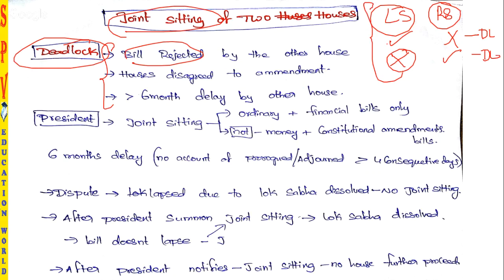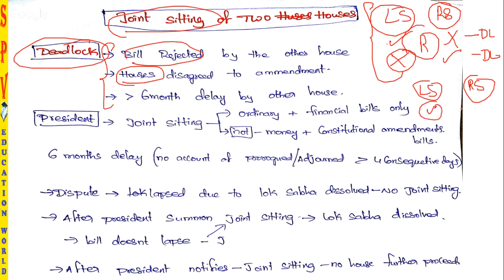Condition two: the houses disagree on amendments. Lok Sabha introduces a bill and sends it to Rajya Sabha. Rajya Sabha passes the bill but says some amendments must be made, so they resend it to Lok Sabha. But Lok Sabha never accepts those amendments — they disagree with the amendments proposed by Rajya Sabha.